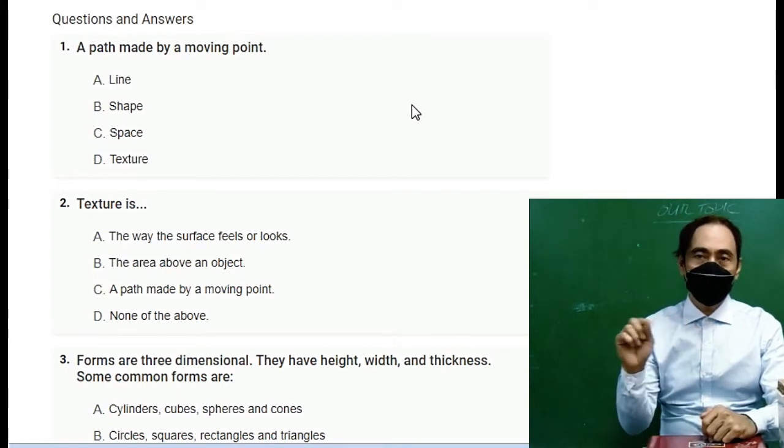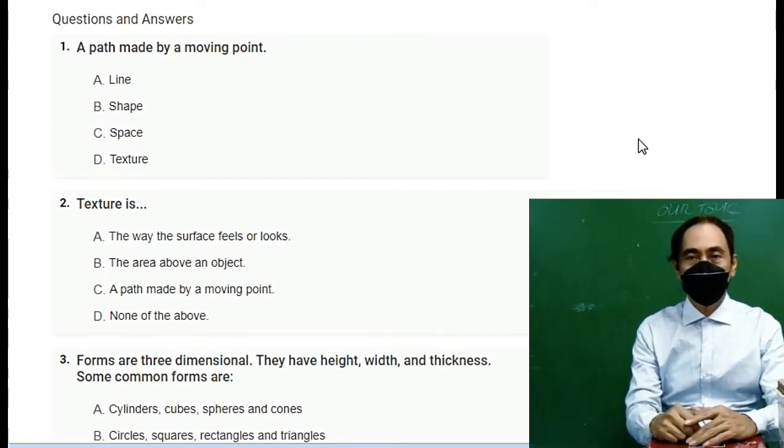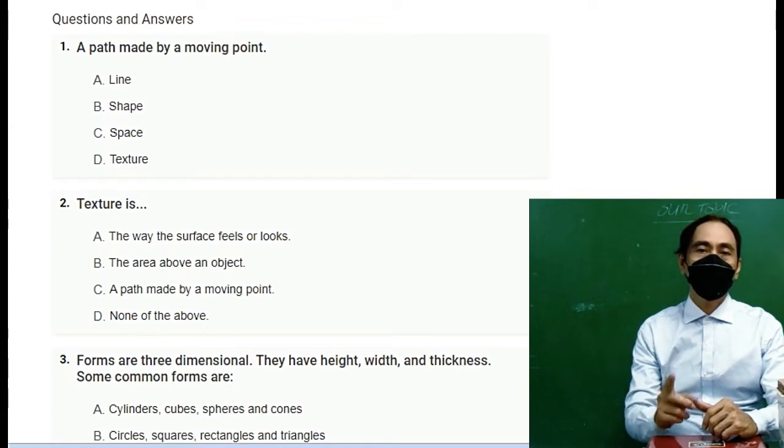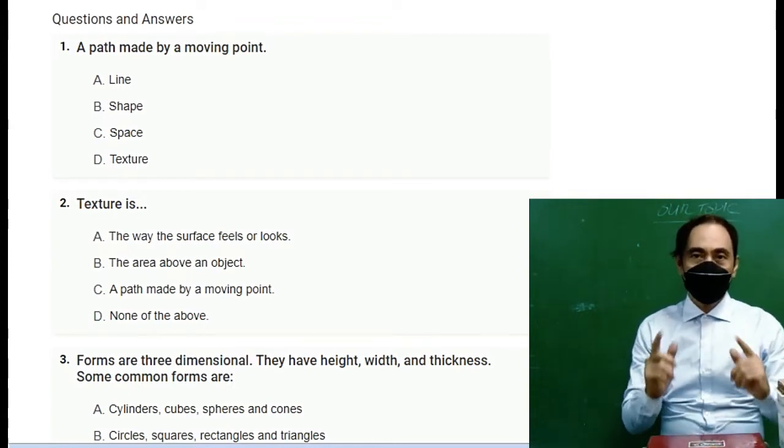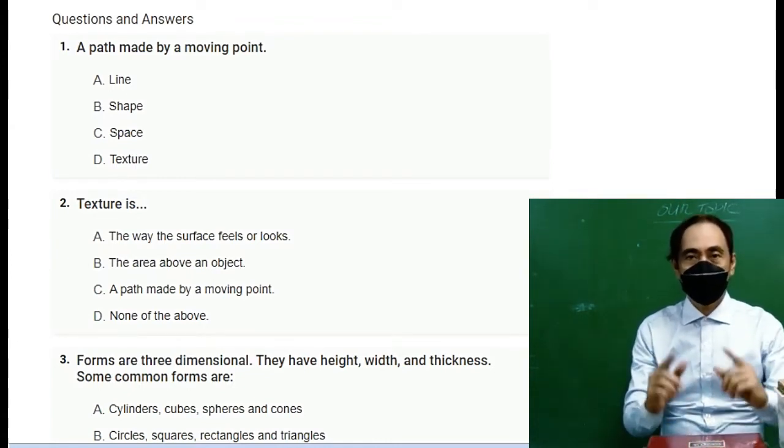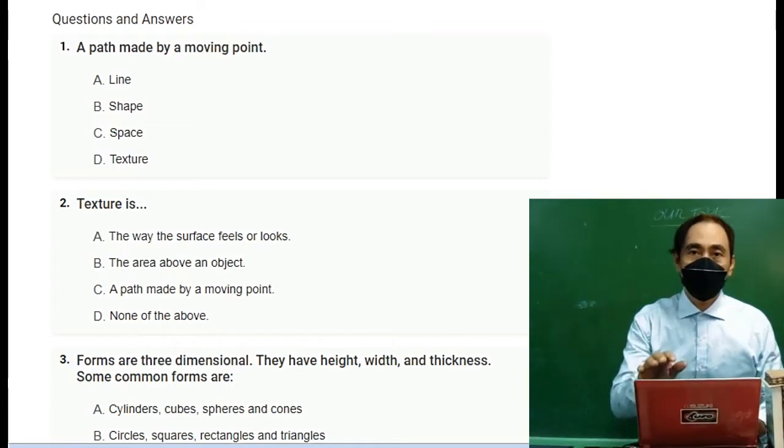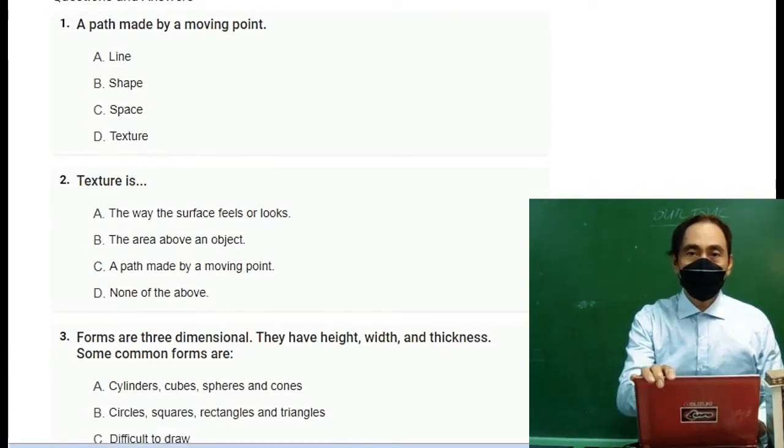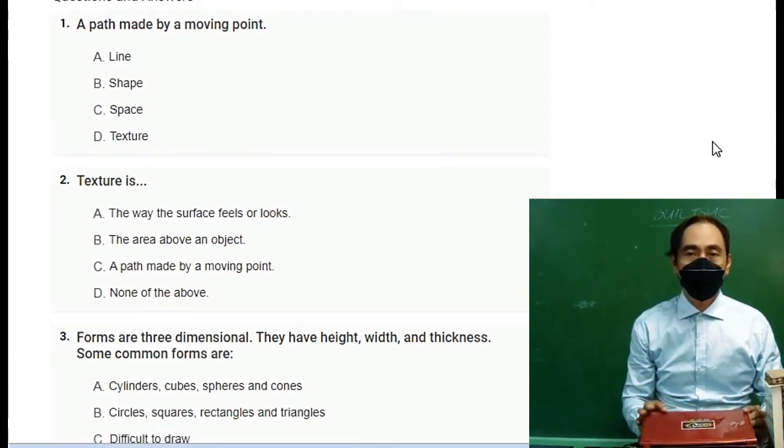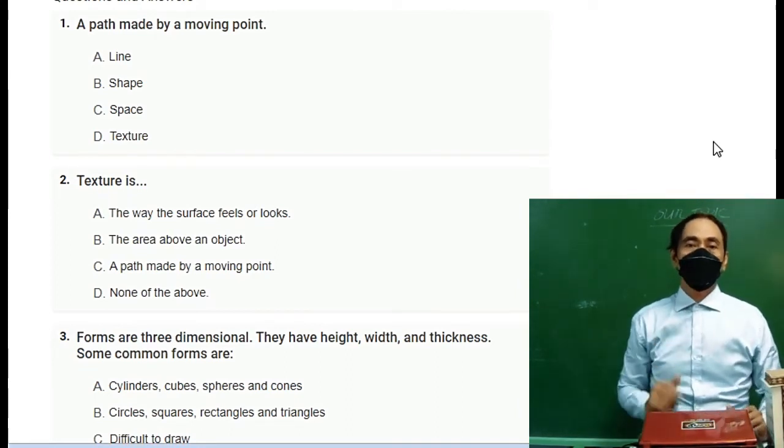Number one: A path made by a moving point. A. Line, B. Shape, C. Space, D. Texture. Just encircle every letter that is your answer and do not encircle two letters, only one. For example, if your answer is line, just encircle the line.